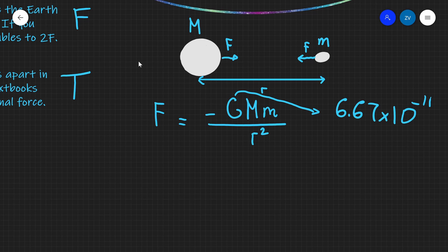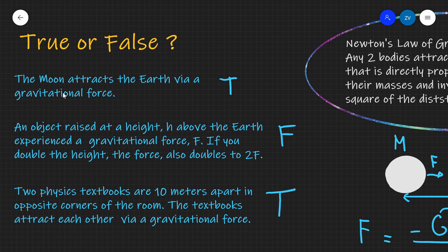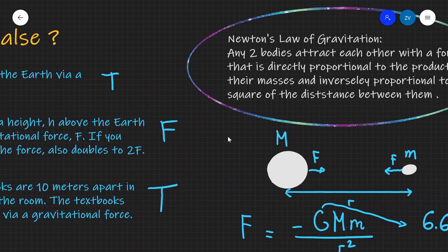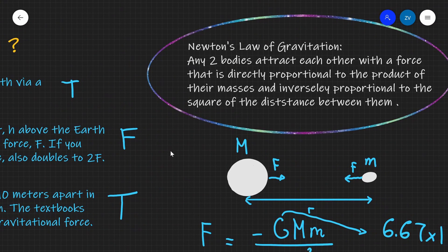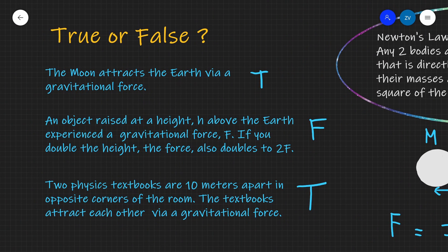The first statement was that the moon attracts the earth via a gravitational force — this is absolutely true. Newton's law of gravitational attraction says that any two bodies attract each other with a force directly proportional to the product of their masses and inversely proportional to the square of the distance, which is why this statement is true.